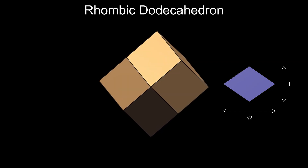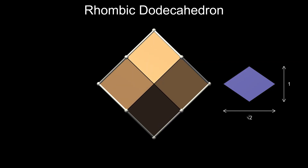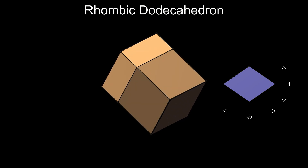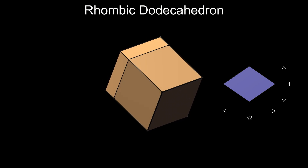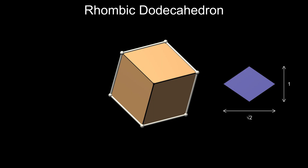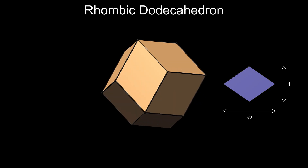Viewed from a vertex with four faces, it has a square profile, but from a vertex with three faces, it's hexagonal. From other angles, it can seem completely irregular.